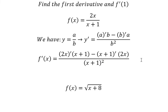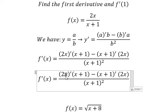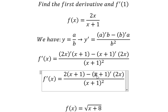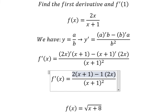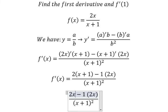Now we need to simplify. First derivative of 2s gives us 2, because first derivative of s gives 1. First derivative of (s plus 1): first derivative of s gives 1, and first derivative of the constant 1 gives 0, so we just have 1. If we simplify, we will have 2s plus 2 minus 2s.